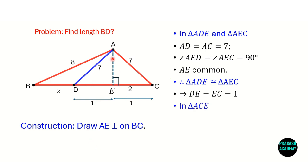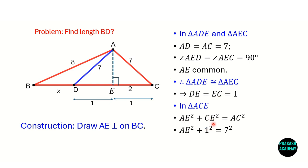Now consider triangle AEC. I can apply the Pythagoras theorem: AE² + EC² = AC². EC is equal to 1 and AC is equal to 7, so AE² + 1² = 7², which gives AE² = 48. Therefore AE is equal to √48. We ignore the negative root since length cannot be negative, so AE = √48.